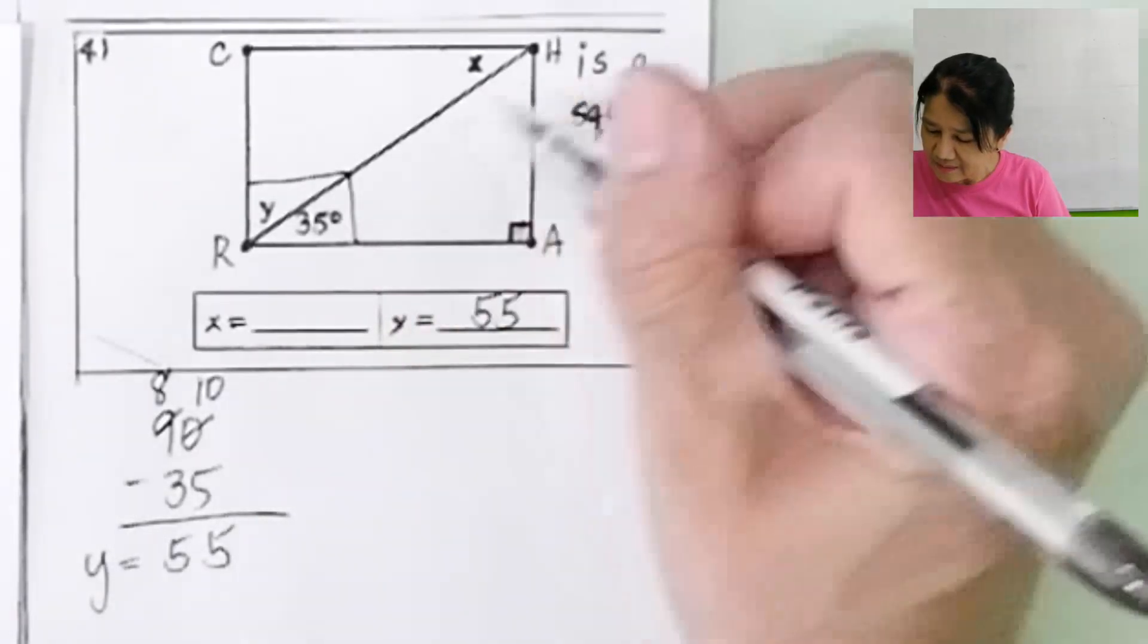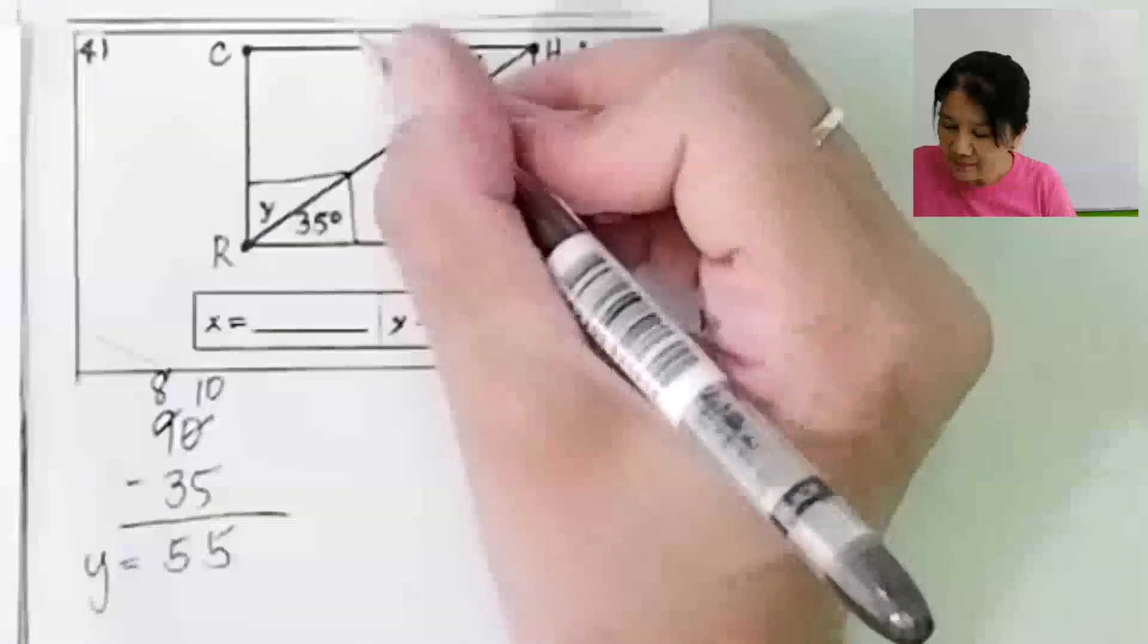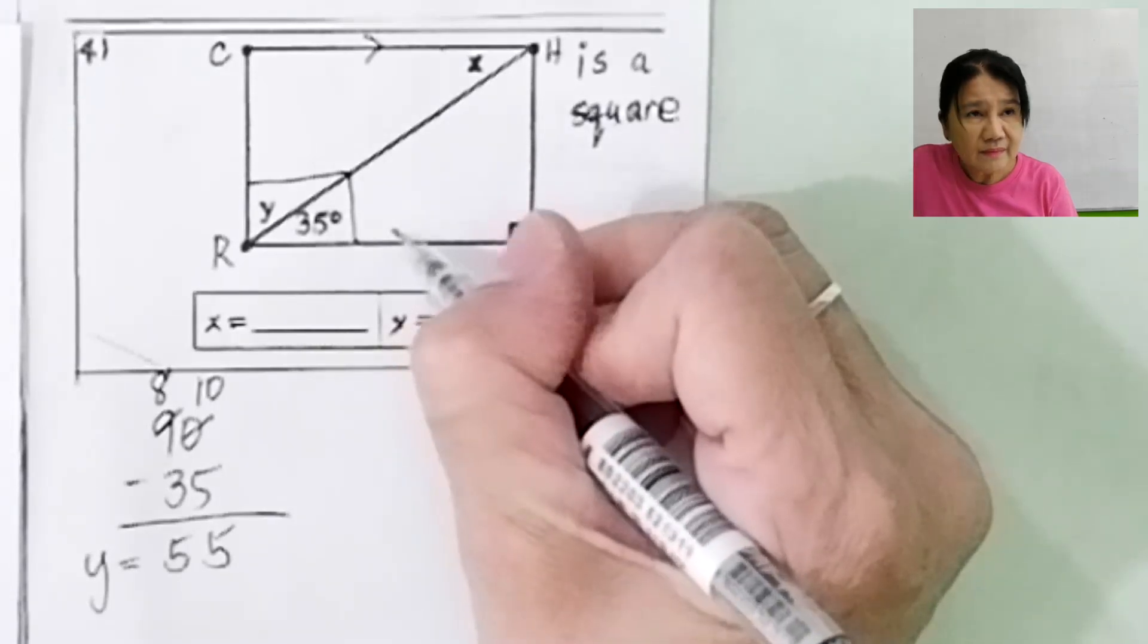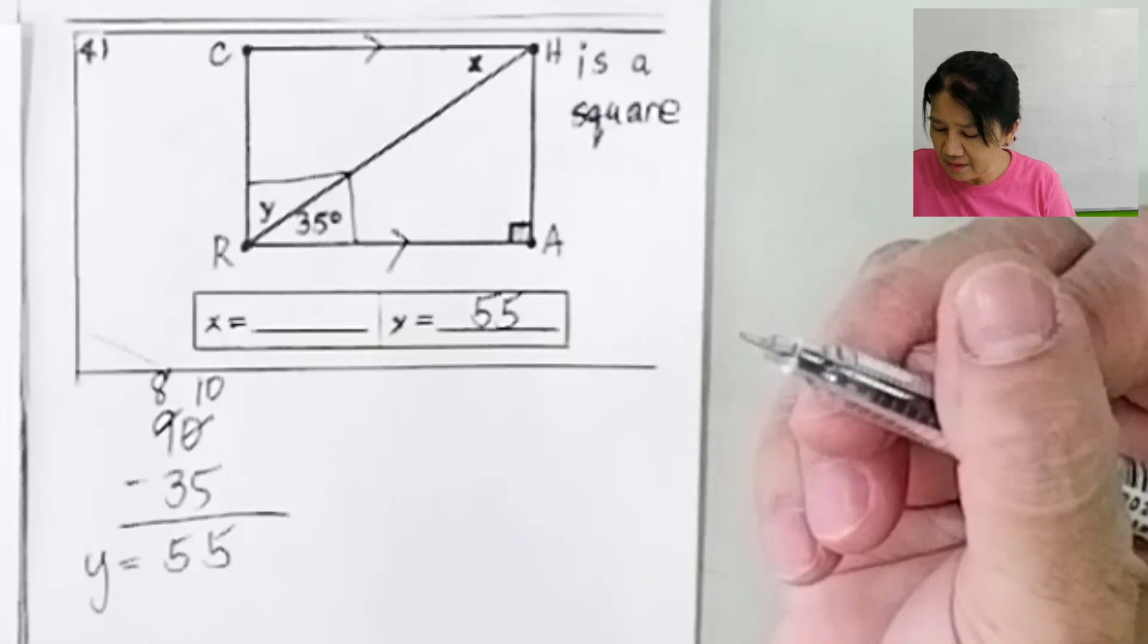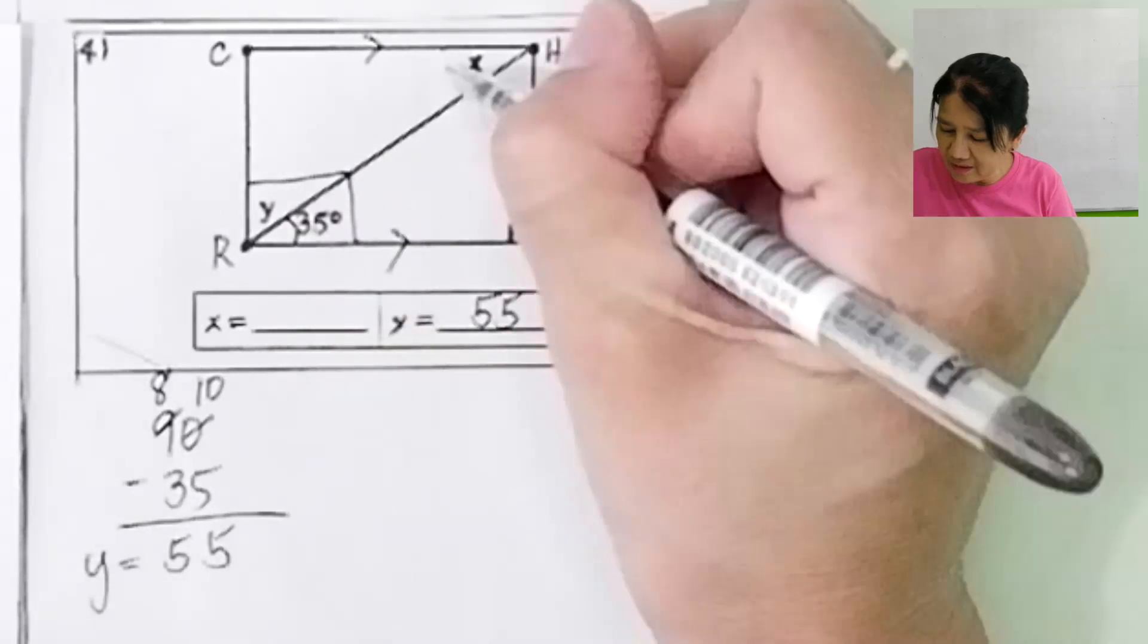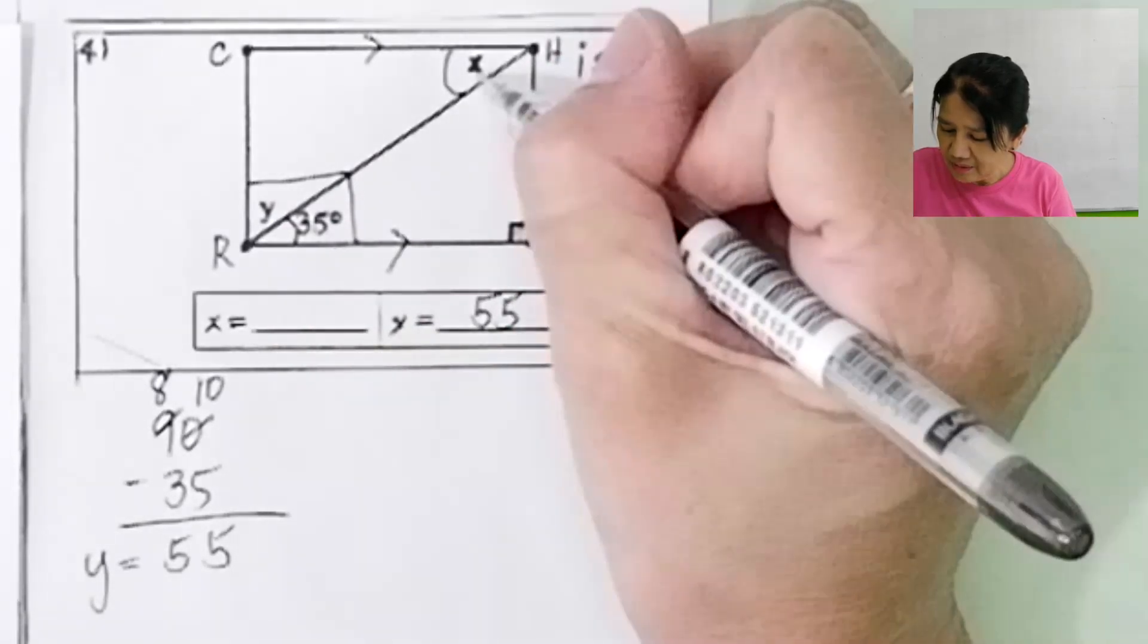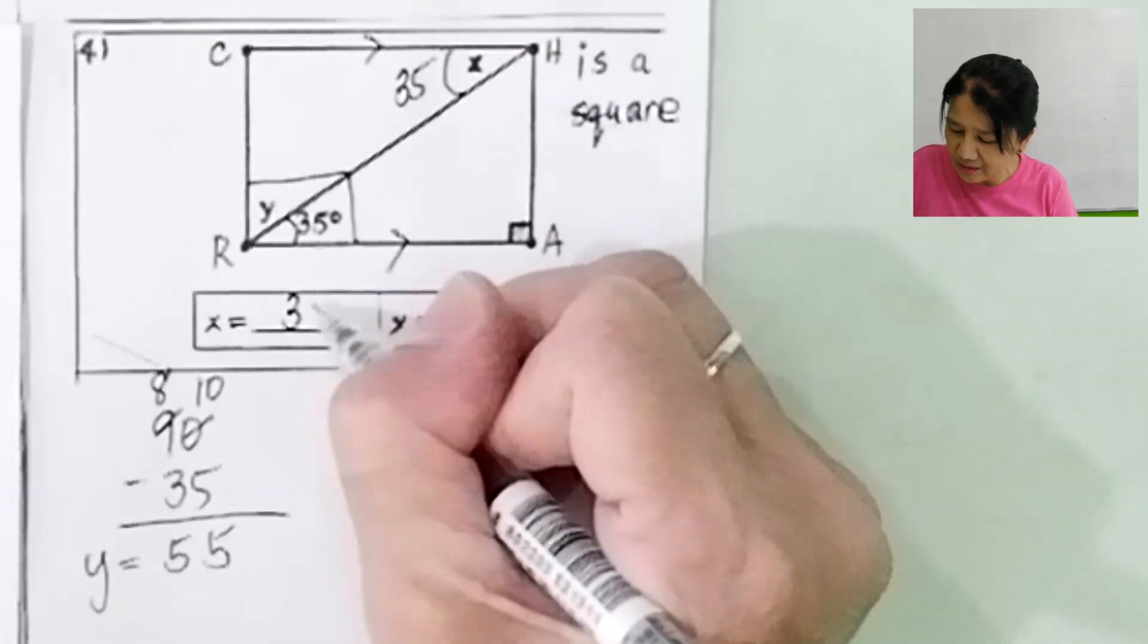Now what about x? A square is a parallelogram. So this line segment is parallel to this line segment. Therefore, the alternate interior angles are congruent. So x must be 35. So x is equal to 35.